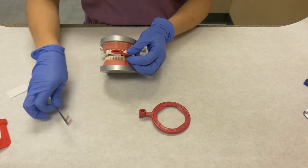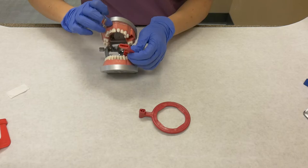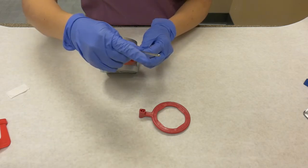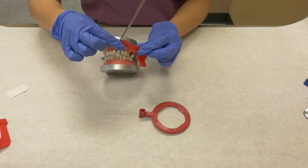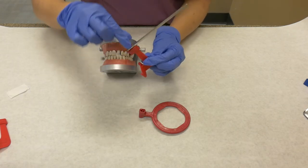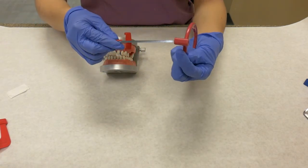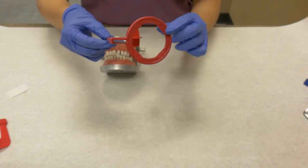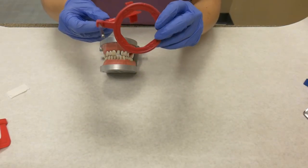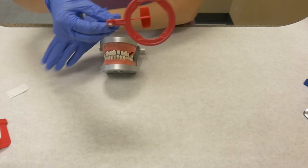So to set up our XCP, take the bite plate, keeping in mind how it will be placed in the patient's mouth, attach the bite plate to the metal arm, then slide the ring onto the other end of the metal arm so that the bite plate and receptor are visible through the ring.